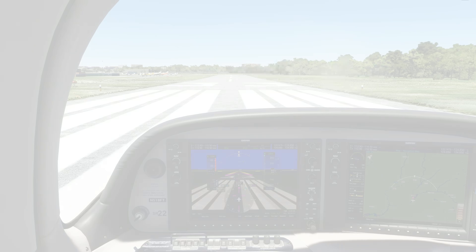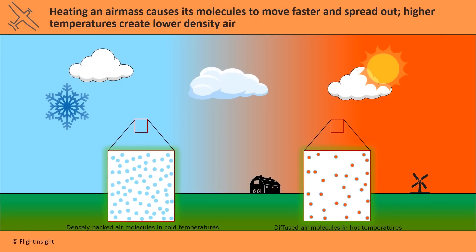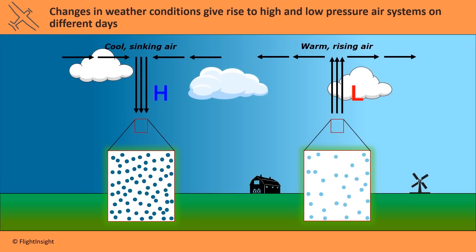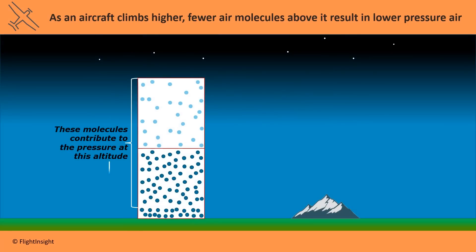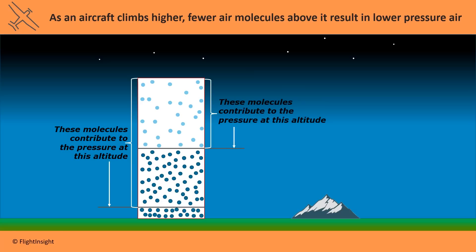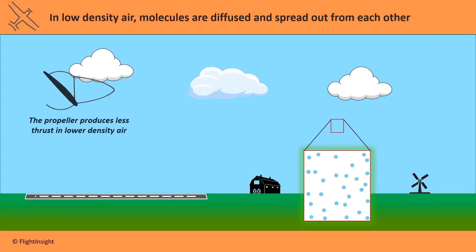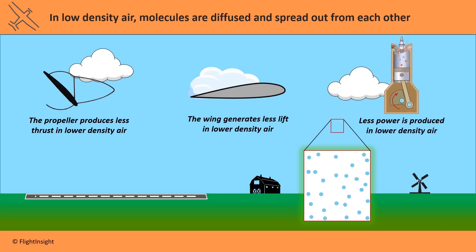What affects the density of the air? When the temperature is higher, air molecules spread out and are more diffuse, lowering the air density. When the air pressure is lower due to weather changes, the same thing happens. When we're higher above sea level, the air density is also lower — there are fewer air molecules in a given volume of space. The aircraft doesn't perform as well: there's less air for the propeller to push to generate thrust, less air for the wing to push to generate lift, and less air for the engine to breathe to create power.